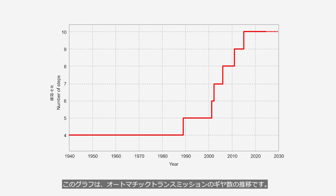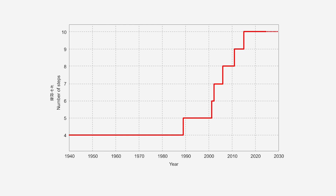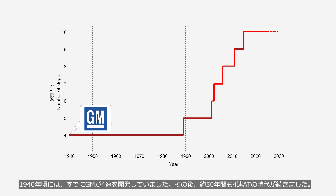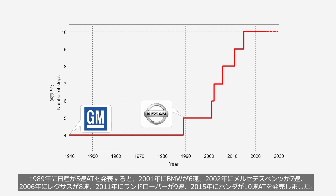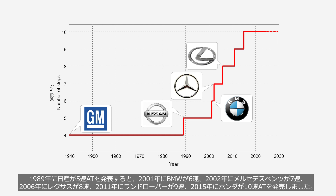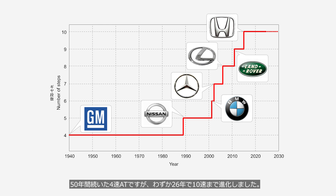A graph depicts the progression of the number of speeds in automatic transmissions. By around 1940, GM had already developed a four-speed automatic transmission, and the four-speed era continued for approximately 50 years — though two-speed and three-speed ATs also existed during that period. In 1989, Nissan introduced a five-speed AT, followed by BMW's six-speed in 2001, Mercedes-Benz's seven-speed in 2002, Lexus's eight-speed in 2006, Land Rover's nine-speed in 2011, and Honda's 10-speed in 2015. Although the four-speed AT lasted 50 years, it evolved to a 10-speed in just 26 years.